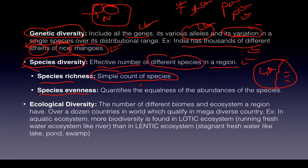Finally, ecological diversity means having as many ecological systems or biomes as possible in a particular region. There are seventeen countries called mega biodiverse countries. Lotic refers to running freshwater, which has more biodiversity because of the mixing of nutrients, energy, and sunlight. Lentic — think lethargic — refers to stagnant freshwater like ponds and swamps, so it has less biodiversity.